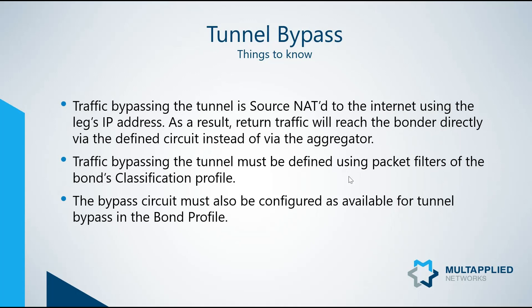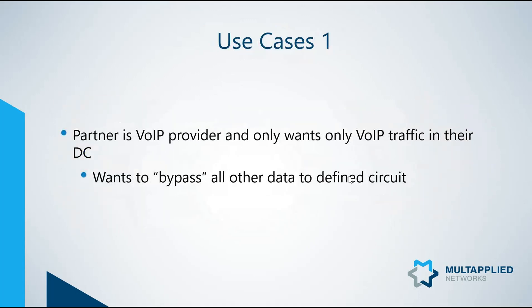Not only do you have to create the custom classification profile, but then you have to go into the bond and tell it to use that classification profile and define the circuits that will be used as bypass. The most prevalent use case we see for tunnel bypass is voice providers. They provide their customers with voice, and it's important that they provide QoS and have the ability to use multiple circuits for that voice to run on. But that's the only traffic they want back into their data center, and they would like to bypass all other traffic to a defined leg.